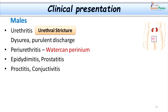Let us look into some clinical presentations. In males, they mainly present as urethritis. As a complication, urethral strictures can develop. Other complications include periurethritis and periurethral abscesses, which may break open as ulcers resulting in oozing of pus — typically described as the watering can perineum. Males can also suffer complications of epididymitis, prostatitis, proctitis, and also conjunctivitis due to autoinoculation from infected hands.